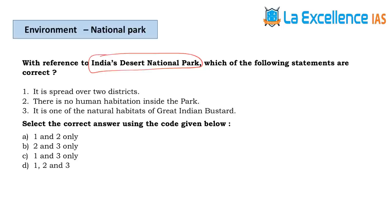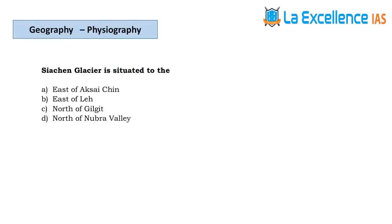The next question is about India's Desert National Park. This video demonstrates how with minimum knowledge and elimination technique you can solve maximum questions. Statement 2 says there is no human habitation inside the park — this is an extreme statement. There are many tribal and aboriginal communities still living in national parks, so statement 2 is wrong. Eliminating those options gives answer C.